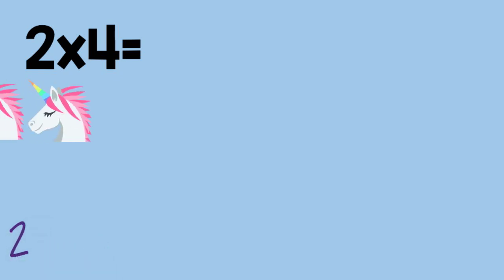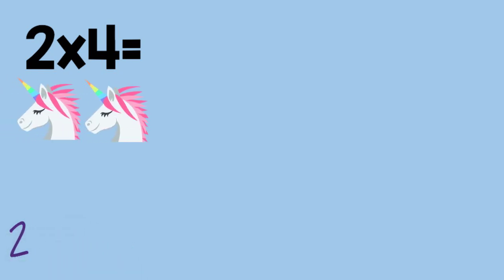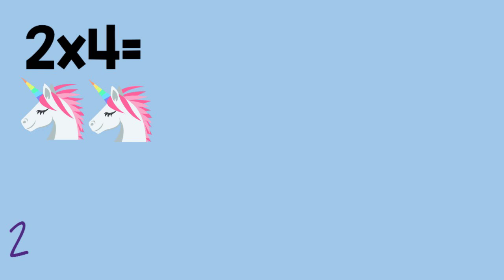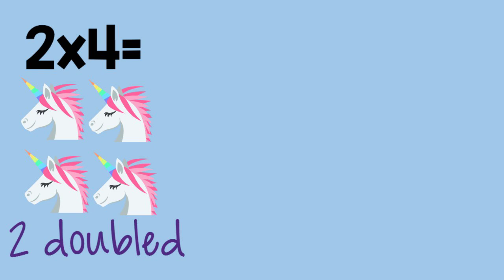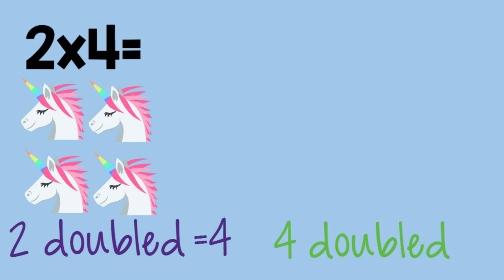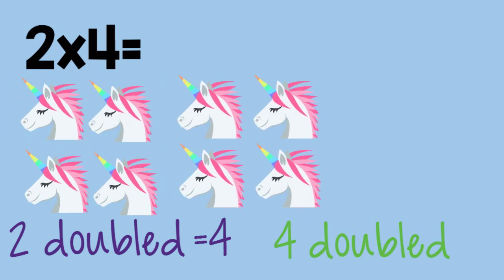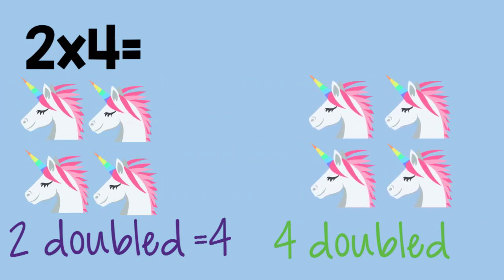Two times four. Two, doubled, is four. Four, doubled, is eight. So two times four equals eight.